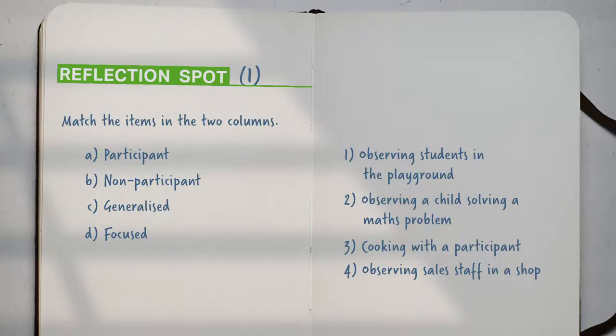Let us pause for a moment and do a small exercise. You can see a list of different kinds of observations: participant, non-participant, generalized, and focused, and another list of examples of observation — observing students in the playground, observing a child solving a maths problem, cooking with a participant, and observing sales staff in a shop. Can you match the items on the first list to those in the second one? Take a minute and complete the exercise.